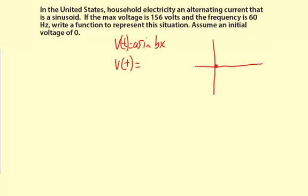We're going to start at zero and then go up to 156, back down to zero, down to a negative 156 like this. So right here is going to be 156 volts, and right here is going to be negative 156 volts. That's what alternating current is like.